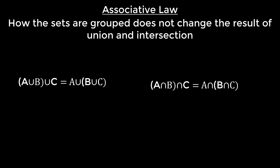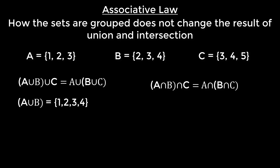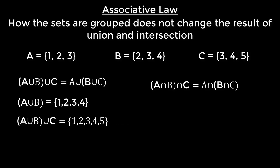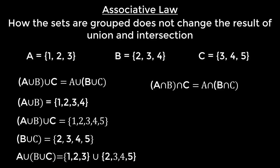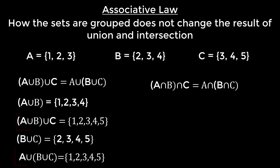Suppose we have three sets A, B, and C. Then A union B is the set {1, 2, 3, 4}. Now A union B union C is going to be the union between {1, 2, 3, 4} and {3, 4, 5}, which is equal to {1, 2, 3, 4, 5}. Now let's see what we get after taking A union with the union of B and C. B union C equals {2, 3, 4} union {3, 4, 5}, which is equal to {2, 3, 4, 5}. Then A union with B union C is the union of {1, 2, 3} and {2, 3, 4, 5}, which generates the set {1, 2, 3, 4, 5}. That means both of these are the same.